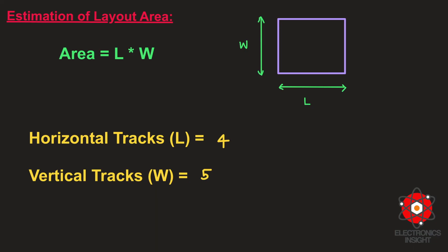For estimation of total physical layout area, we treat it as a simple rectangle with length and width. We are following lambda-based design rules, so all horizontal and vertical track counts are defined in terms of lambda. Once you identify the horizontal and vertical tracks, multiply them to get the total physical layout area — horizontal tracks give the length and vertical tracks give the width.